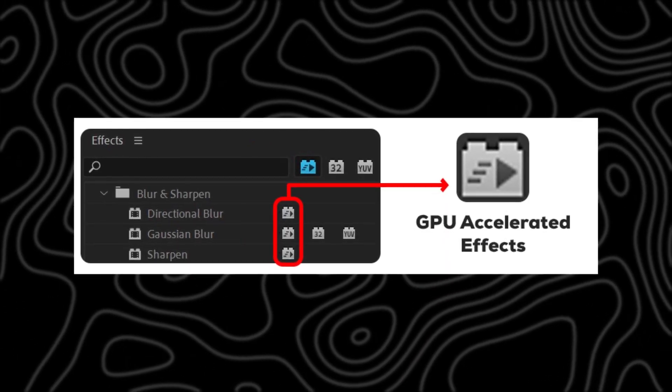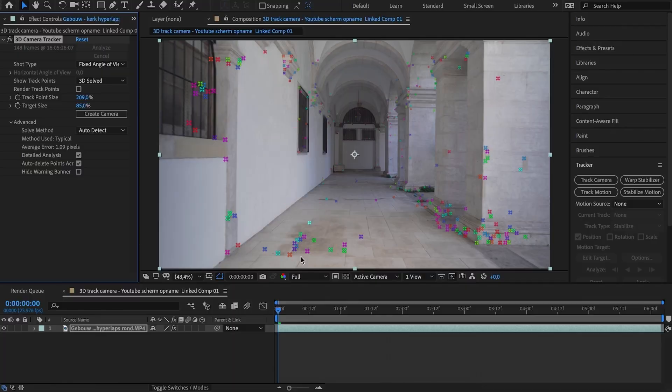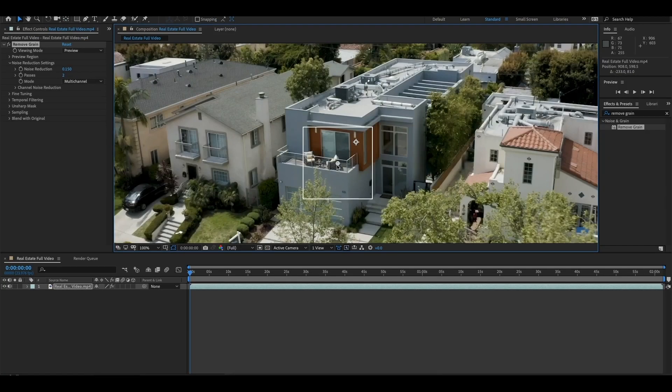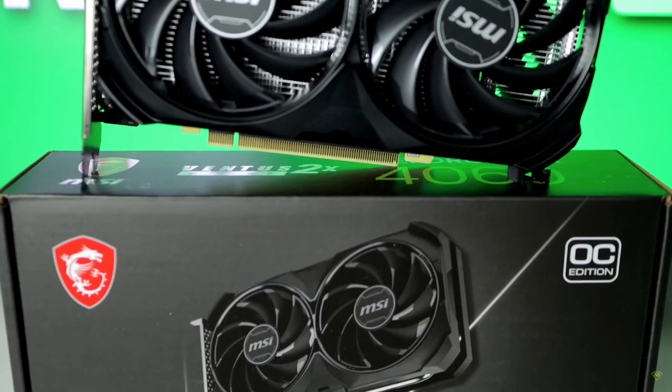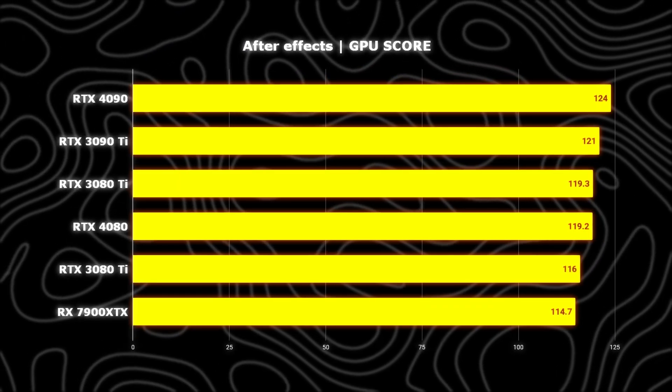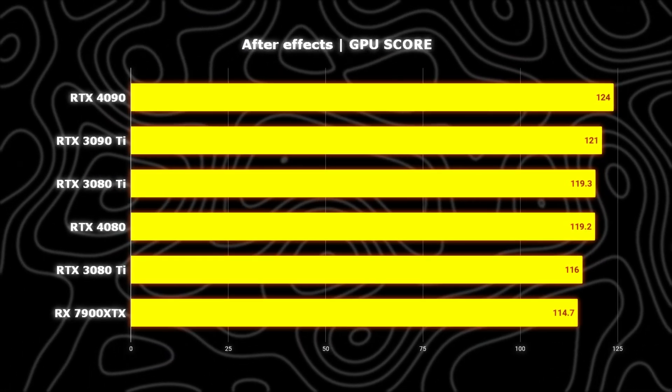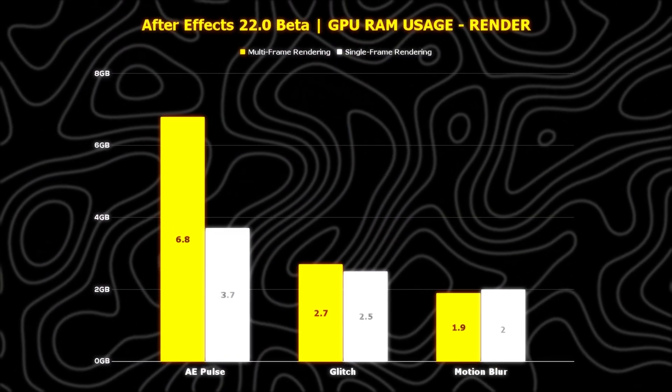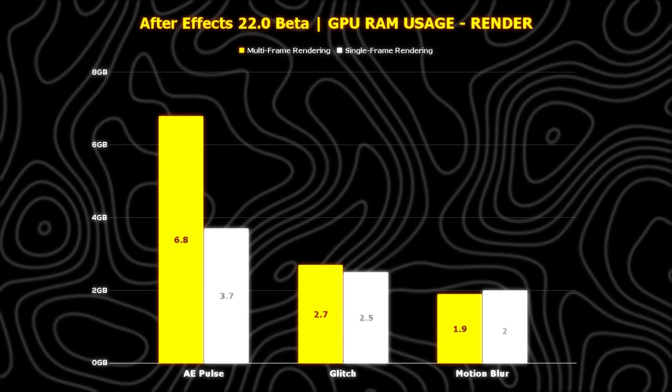Moving on to number two: GPU. Now we've already said that GPU doesn't play a very big role, but if we look at GPU-accelerated effects like warp stabilizing, 3D motion tracking, and VR denoising, that's a part where GPU matters a lot. An RTX 4060 would get your job done without lag. Going any higher would be beneficial for other 3D apps, but not really for Adobe After Effects.